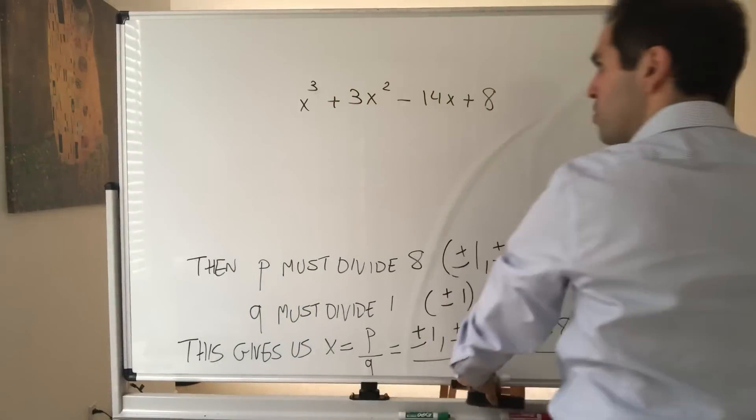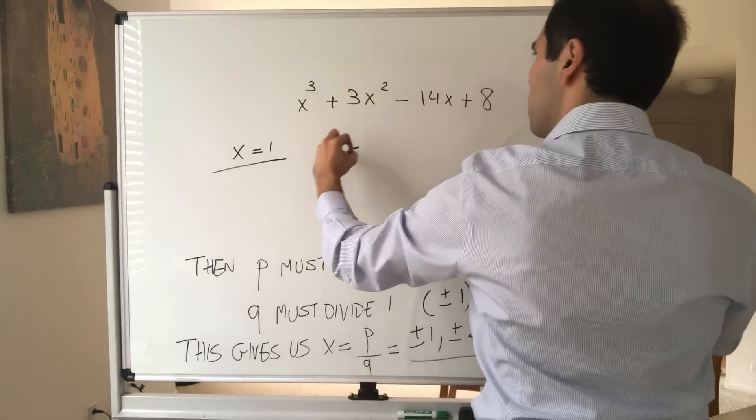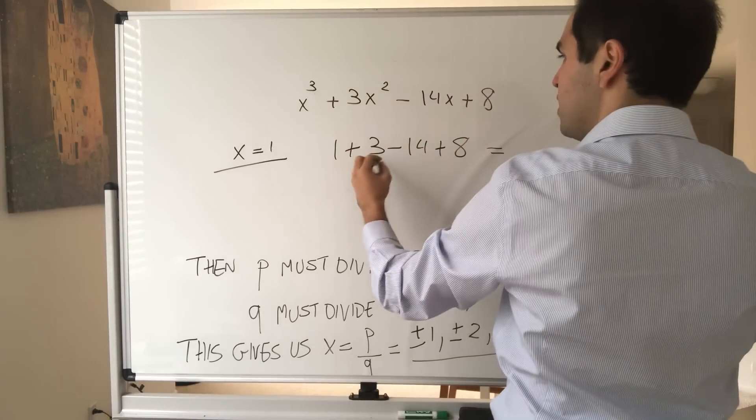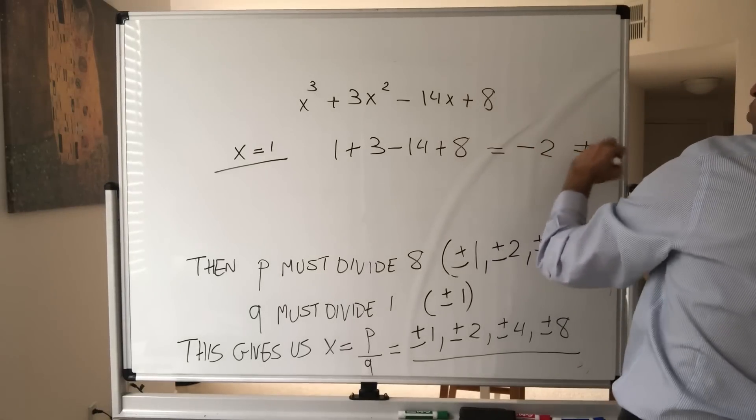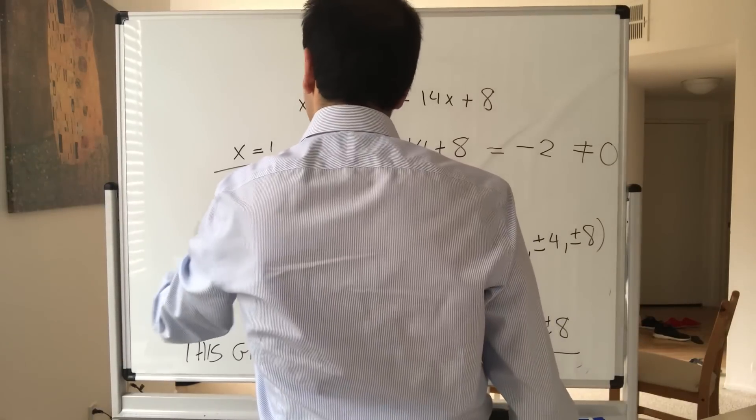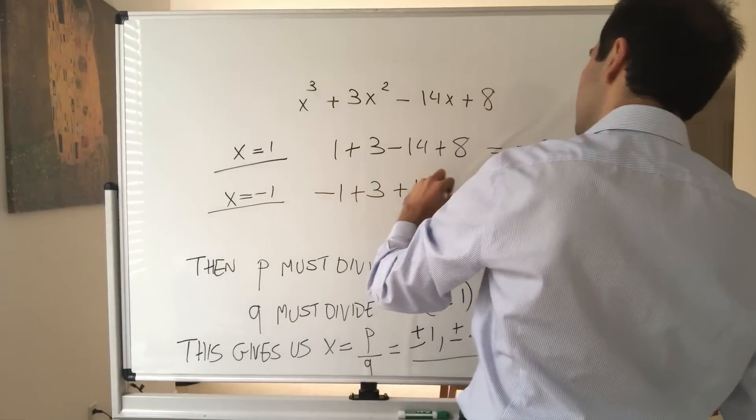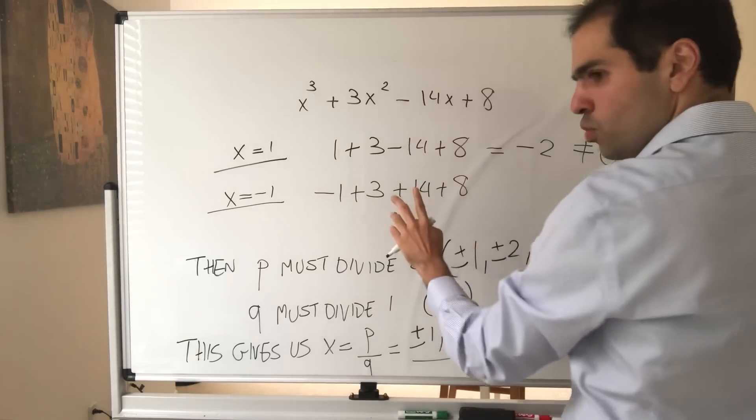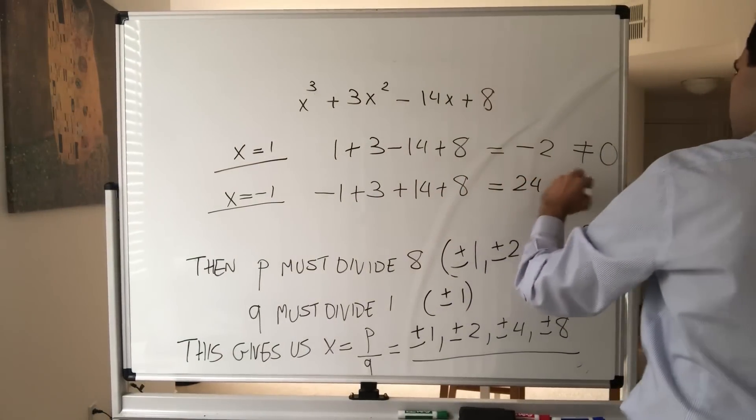So this was our polynomial. Let's try x equals 1. So again, 1 + 3 - 14 + 8. I believe that is 4 + 8 which is 12 minus 14, that's -2, which is not 0. So definitely 1 is not a root. Let's take x equals -1. -1 + 3 + 14 + 8, so let's see, 14 or 22, I believe 24. No problem, six more choices left.